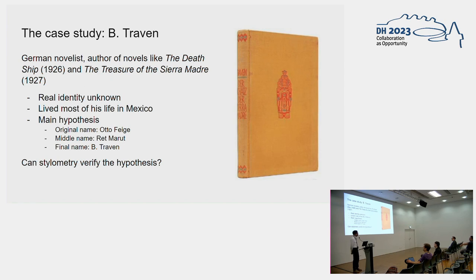The most interesting aspect about this author is the fact that his real identity is unknown. We're talking about some kind of a German Thomas Pynchon or Elena Ferrante, if you know these cases of authors hiding their identity. There is some information about him, for example, he lived most of his life in Mexico.